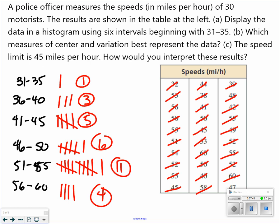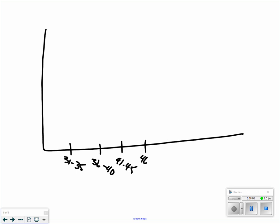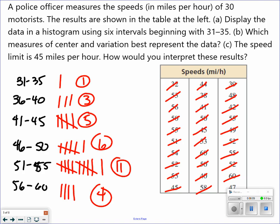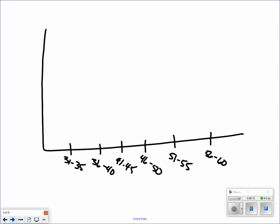I'm going to kind of toggle back and forth here as I draw in my histogram. First interval was 31 to 35. The highest number I have is 11, so I'm just going to go by 2. So 2, 4, 6, 8, 10, 12.